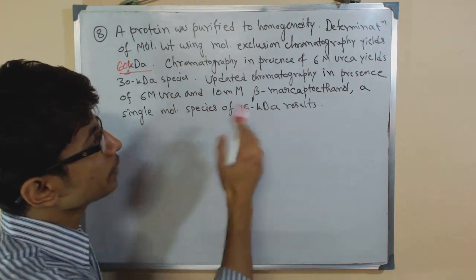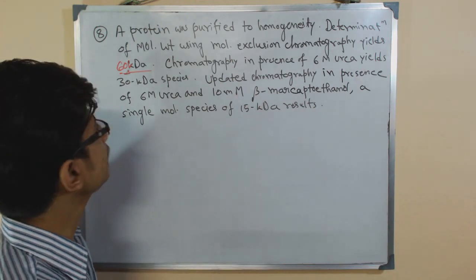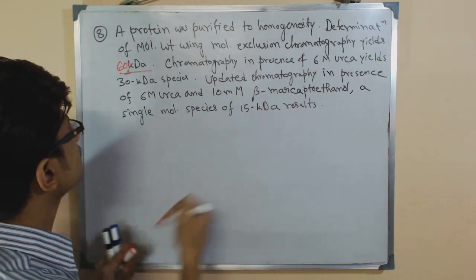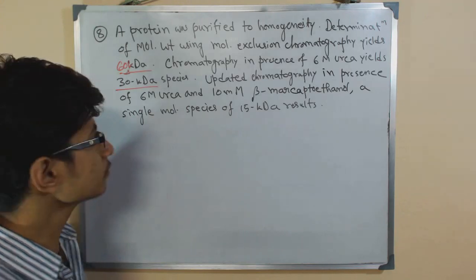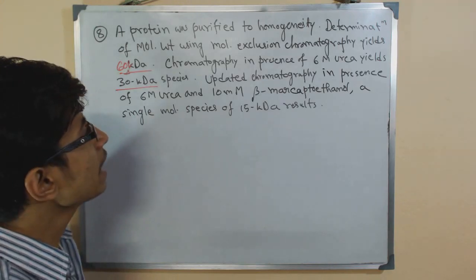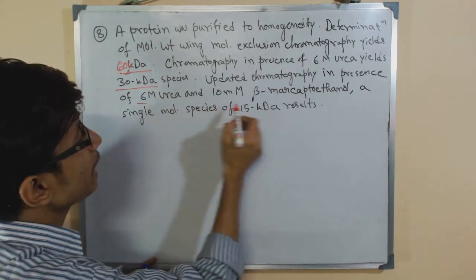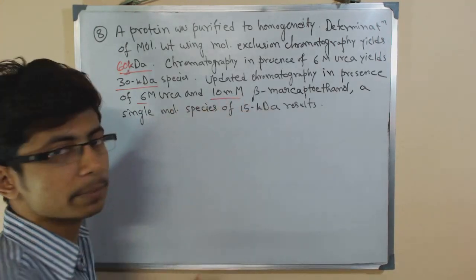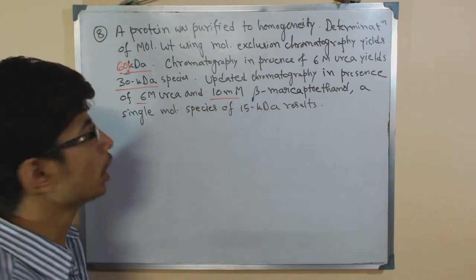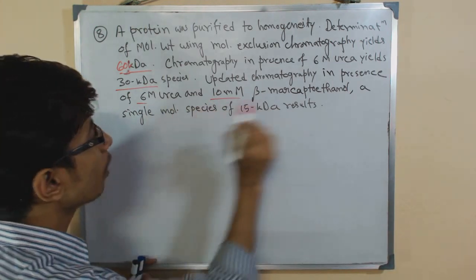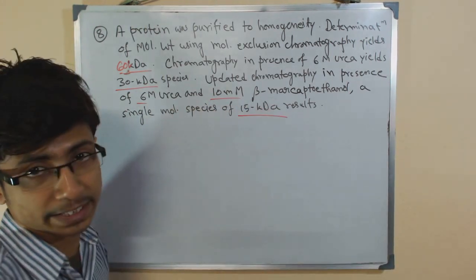Chromatography in presence of 6 molar urea only yields a 30 KD species. And chromatography in presence of 6 molar urea as well as 10 millimolar beta-mercaptoethanol yields one single species of 15 KDA.